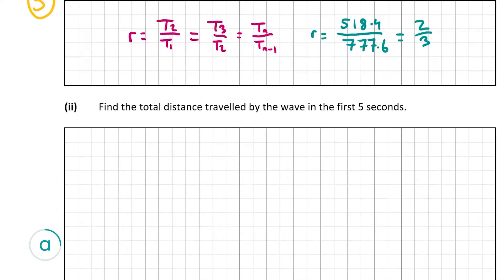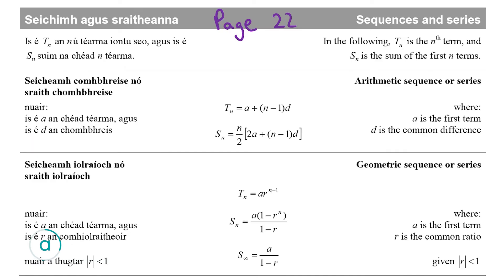Now let's look at part a2, which is worth 10 marks. It wants us to find the total distance traveled by the wave in the first 5 seconds. This is basically finding the sum of the first 5 terms. We have a formula for this in the formula tables book on page 22 — the second last formula on the page: a multiplied by (1 minus r to the power of n) over (1 minus r), where a is the first term, r is the common ratio, and n is the number of terms.